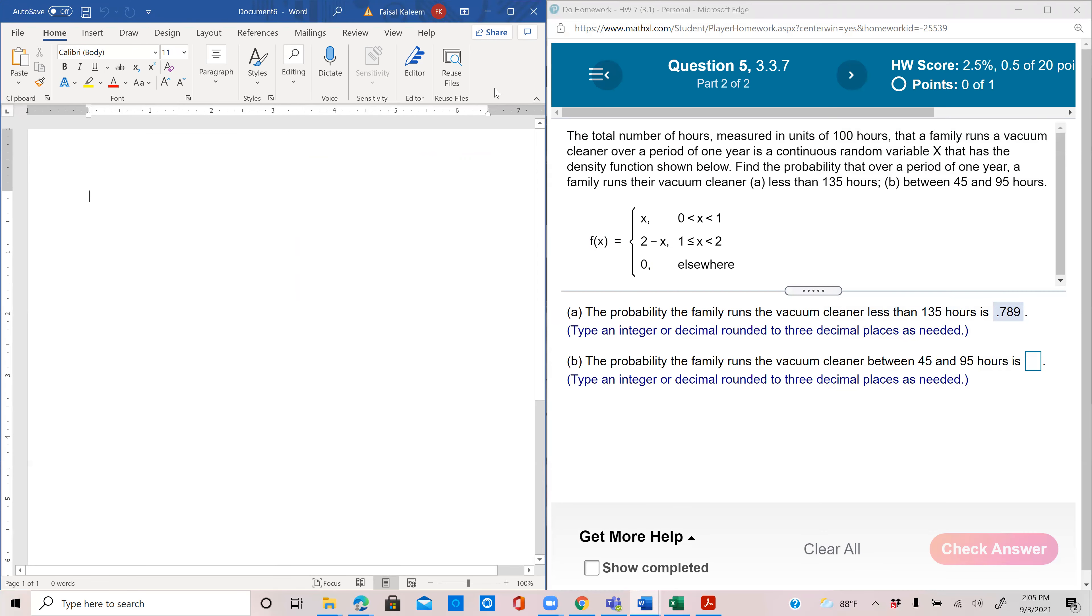Between 45 and 95—remember x is in units of 100—so you want probability x is between 0.45 and 0.95. That will be the integral from 0.45 to 0.95 of fx dx.